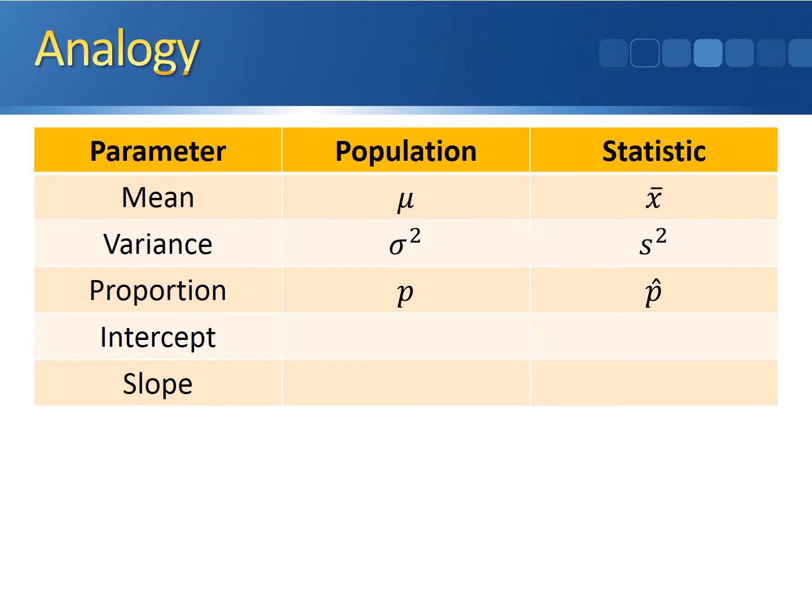To relate what we're doing here with the slope and the intercept back with what we've already done throughout the course of the semester, we can compare the notations for population parameters and sample statistics. For the mean, mu was our population mean and x-bar was our sample mean. For the variance, we used sigma squared to denote the parameter and s squared to denote the statistic.